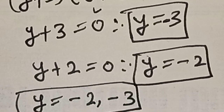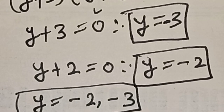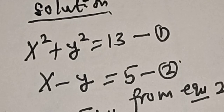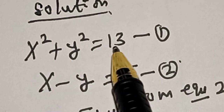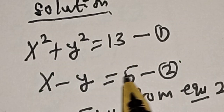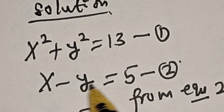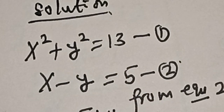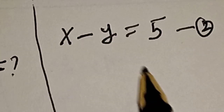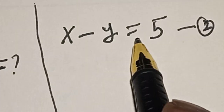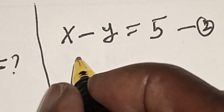In order to get the value of x, we have to substitute for y in any of the equations — either equation 1 or equation 2. In this case I am going to make use of equation 2. Our equation 2 is x minus y is equal to 5.